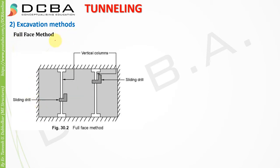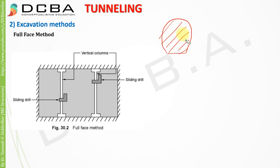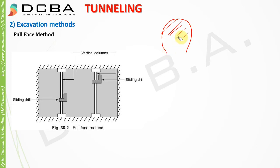The first method is the full face method. As the name suggests, full face means we are going to excavate the entire face of the tunnel at once. For example, with a horseshoe-shaped tunnel, the face is the entire profile. You can either excavate the entire face in one go, or do it in parts — the top portion first, then the bottom portion.